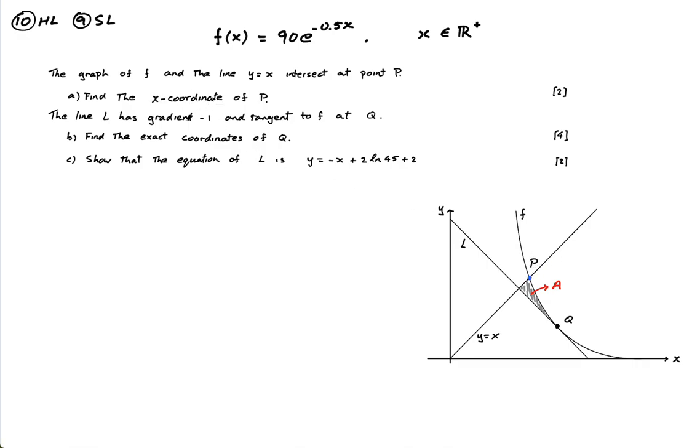So find the x-coordinate of P is the first question. So where they intersect is where they equal. So I'm just going to equate 90e to the minus 0.5x equals x. So it's where y equals x equals y equals this. Equate them and find the coordinates.